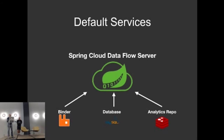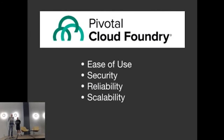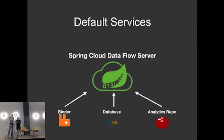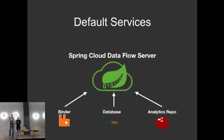Let's talk about default services. Glenn had a slide showing the binder, database, and analytics repo. Default services for the tile currently are: we support Rabbit, we support MySQL for the database, and Redis for the analytics repo. Why those three? We've got tiles for those three, so it's logical that they are our dependencies for the tile.